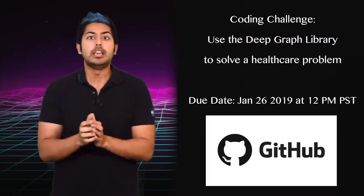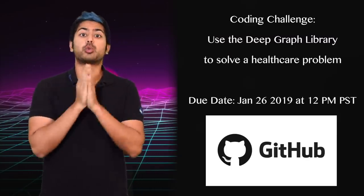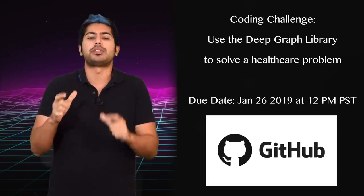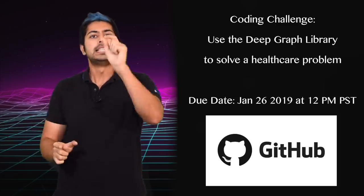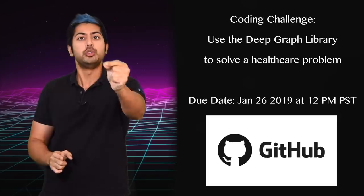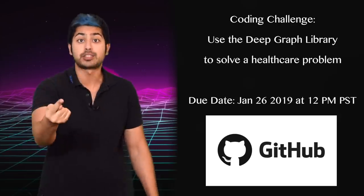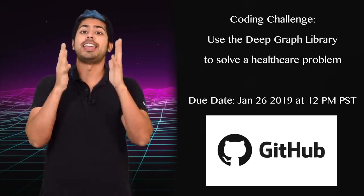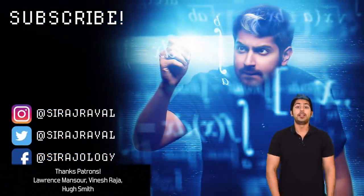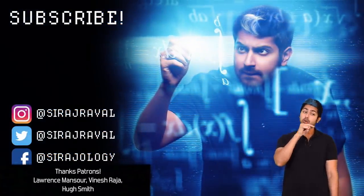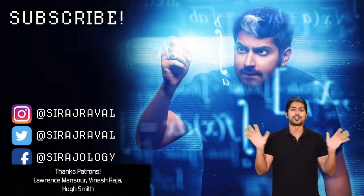That wasn't so difficult, right? In fact, it was pretty simple. Let's make things a little more interesting with a coding challenge, shall we? Using the deep graph library, create a graph network that solves a healthcare problem. Send your GitHub repository to me within a week, and I'll give the coolest project a shout-out in next week's episode. Good luck and happy learning. Welcome to the end of my video. If you want to see how deep the rabbit hole goes, hit subscribe. And thanks for watching.